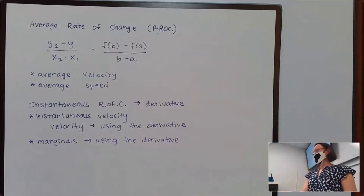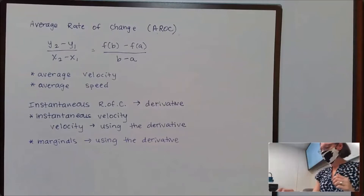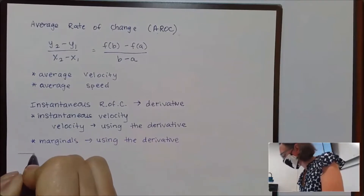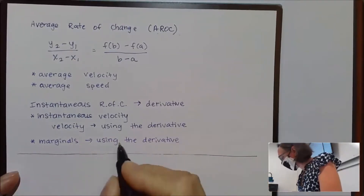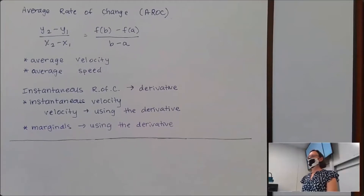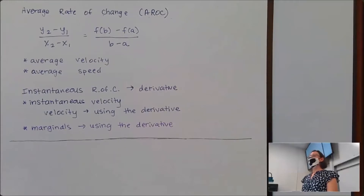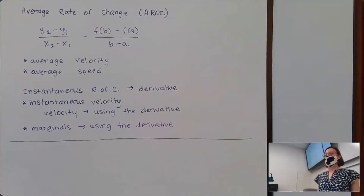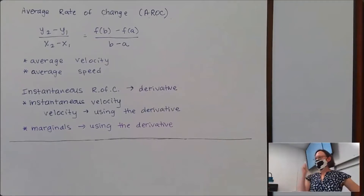Both the physics and econ contexts are in section 2.3 of our book. That's really just vocabulary. Now let's talk actual problems. I'm going to build up to an equation in our textbook using some physics. What's the gravitational acceleration everywhere on Earth?